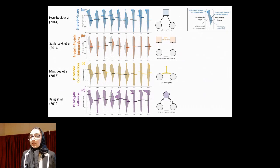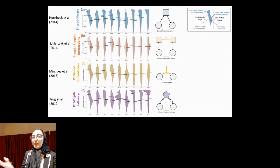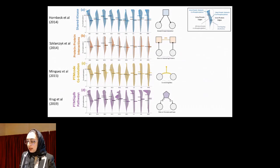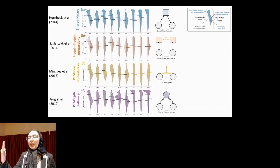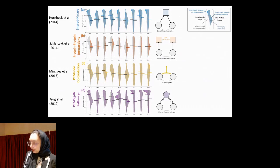In order to assess the significance, we compare these pairs with specific biological characteristics against all pairs in all the datasets. Based on these histograms, you can see that if they are biologically relevant, it is more likely that they are co-phosphorylated and highly positively co-phosphorylated.